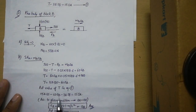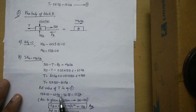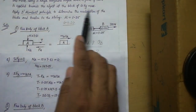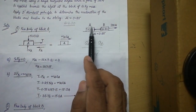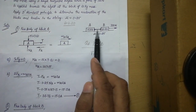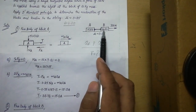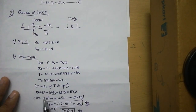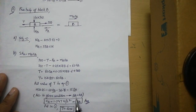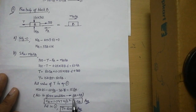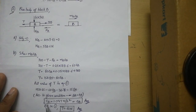Substituting the value of T from block B's equation into Equation 1 still gives two variables: acceleration of block B and acceleration of block A. To resolve this, observe that since both blocks are connected by a string and both move towards the right, the acceleration of block A equals the acceleration of block B. Therefore, we can replace AB with AA in the equation, which allows us to solve and find the acceleration of both blocks.